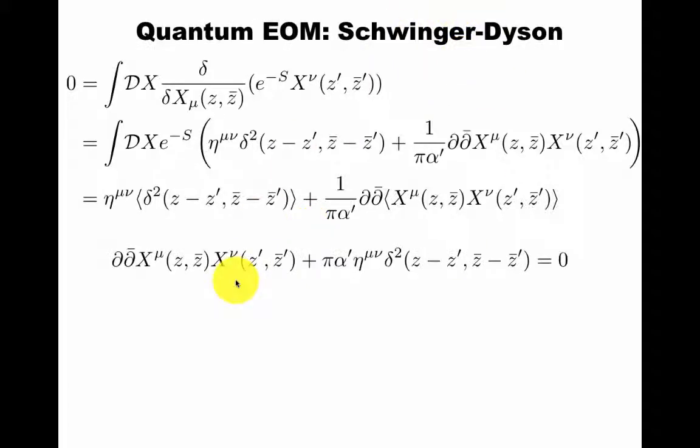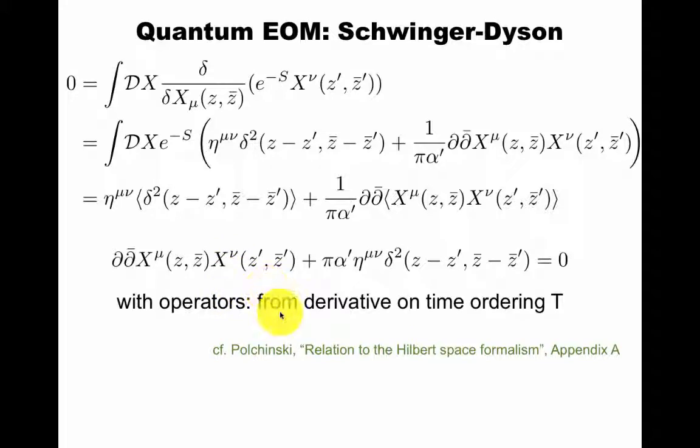This is called the Schwinger-Dyson equation in quantum field theory. This is not special to two dimensions. We can write this kind of equation in four dimensions, for example. You might be more familiar in the operator formalism. There you get the delta function from a derivative acting on the time ordering t. It's a nice explanation of this in Polchinski's appendix a. But here we're thinking about this in terms of functional integrals, where these are functions, and the ordering only appears if you slice it up, as he describes here.